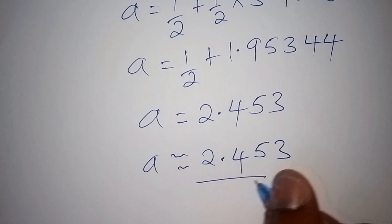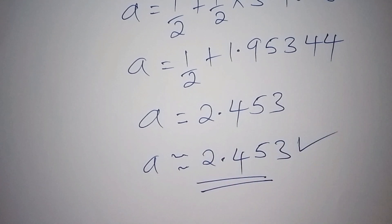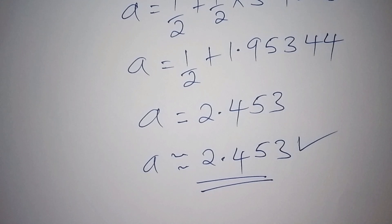Our value for A is approximately 2.453. That is our correct answer. If you really loved how we worked it out, please kindly subscribe to this channel.